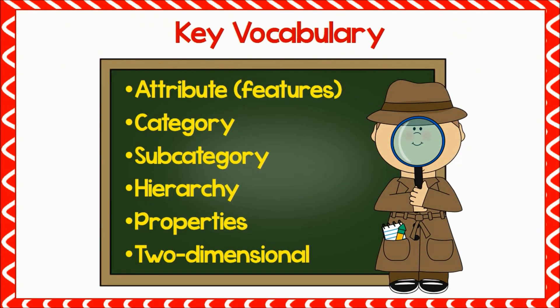The term 'property' in these standards is reserved for those attributes that indicate a relationship between components of shapes. For example, having parallel sides or having all sides of equal length are properties. Within this standard, the terms 'attributes' and 'features' are used interchangeably to indicate any characteristic of a shape, including properties and other defining characteristics such as angles and sides.